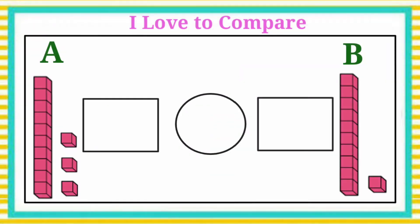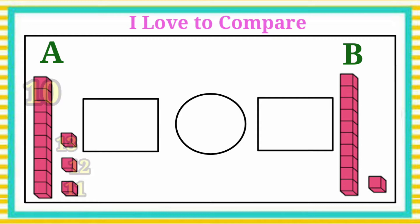Here we have two groups of blocks. Let's count Group A. This is one group of ten blocks and count others. Ten, after eleven, twelve, thirteen. Group A has thirteen blocks. Let's write the number thirteen in the box.